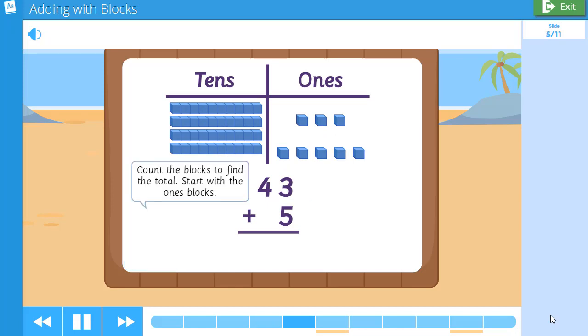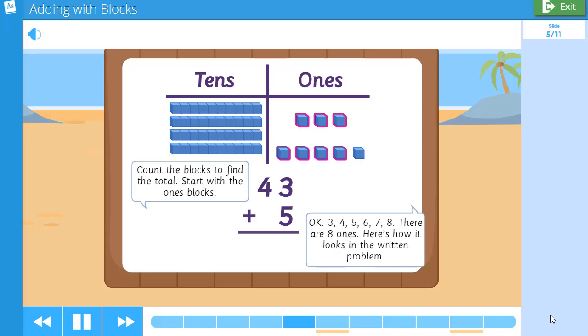Count the blocks to find the total. Start with the ones blocks. Okay. 3, 4, 5, 6, 7, 8. There are 8 ones. Here's how it looks in the written problem. 3 ones and 5 ones is 8 ones.